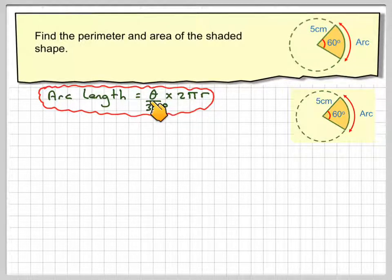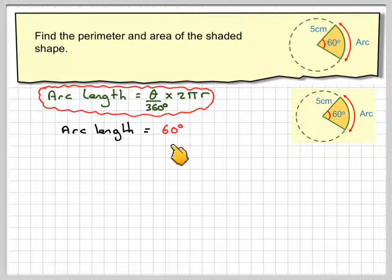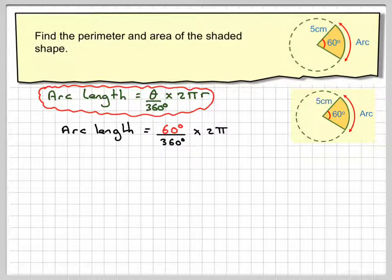So theta, in this case, is going to be 60 degrees. So arc length is going to be 60 divided by 360 times 2 pi times the radius, which is 5 centimeters.